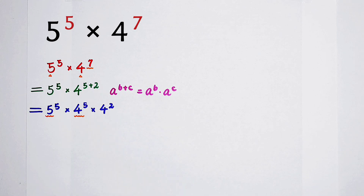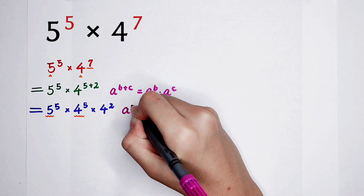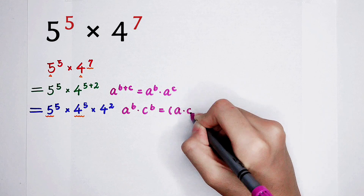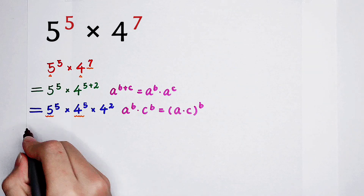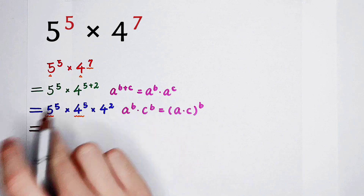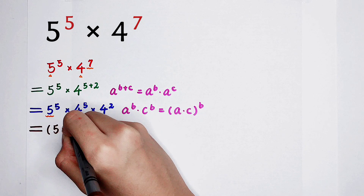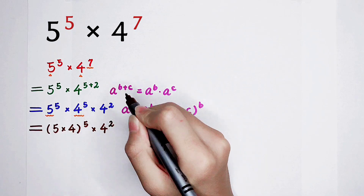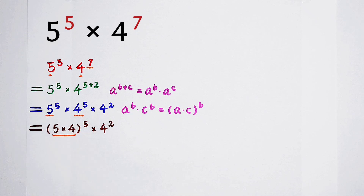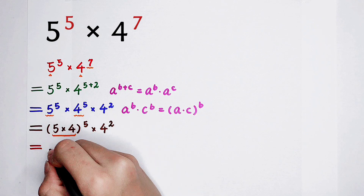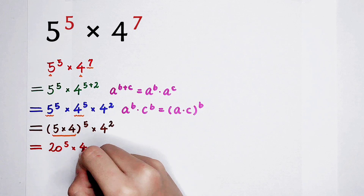So I have to use another formula. This formula says: a to the power b, then times c to the power b. Now a is 5, b is 5, c is 4, b is 5. That is 5 times 4, all to the power the same exponent 5, times 4 to the power 2. Because 5 times 4 is 20, the base becomes 20. So it's 20 to the power 5, then times 4 to the power 2.